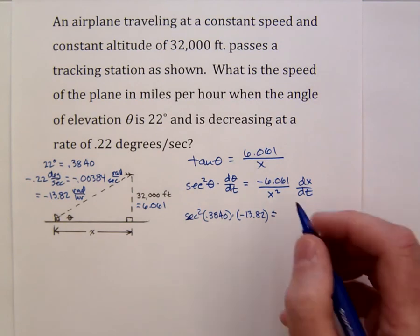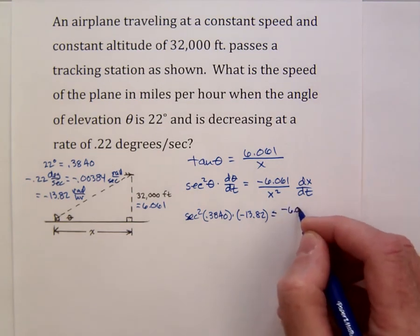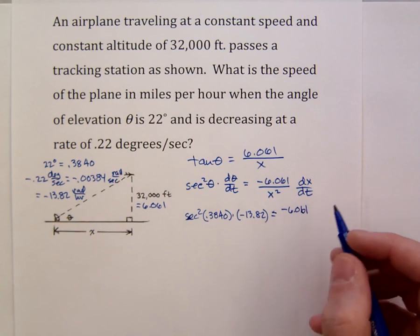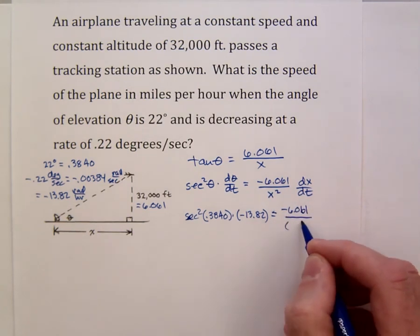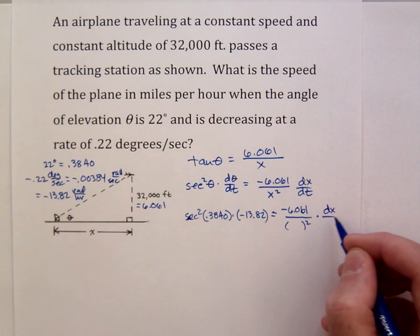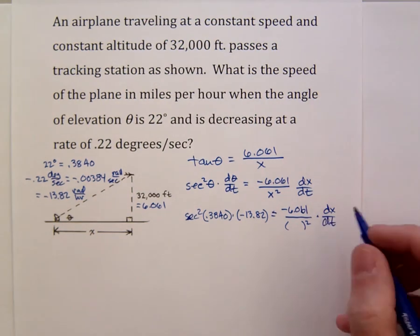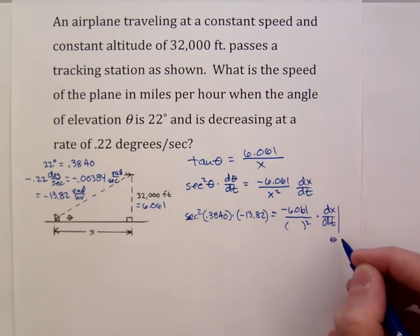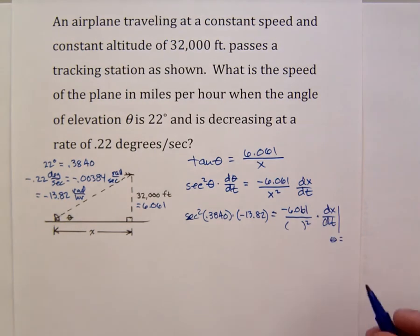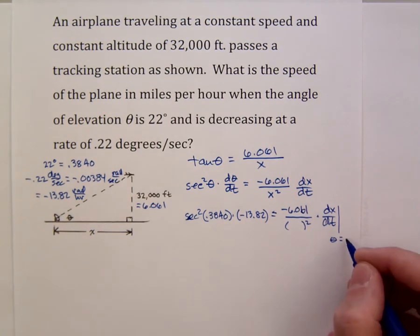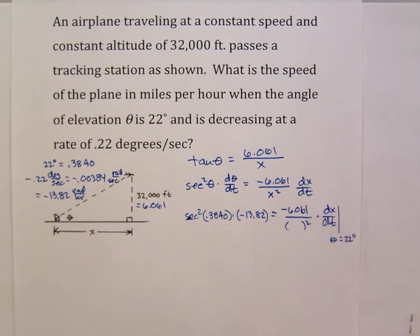And then on the other side we have the negative 6.061 over something squared times dx dt. And it's dx dt at the moment when theta is 22 degrees or 0.384 radians. I'll just say 22 degrees for convenience.